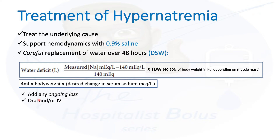You can give the fluid orally, via NG tube, PEG tube, or IV — whatever route is available. For example, if the patient needs 2 liters per day over 48 hours, you can give half orally and half IV with D5W. If the patient has an intact gut, you can use that; if not, give it IV.